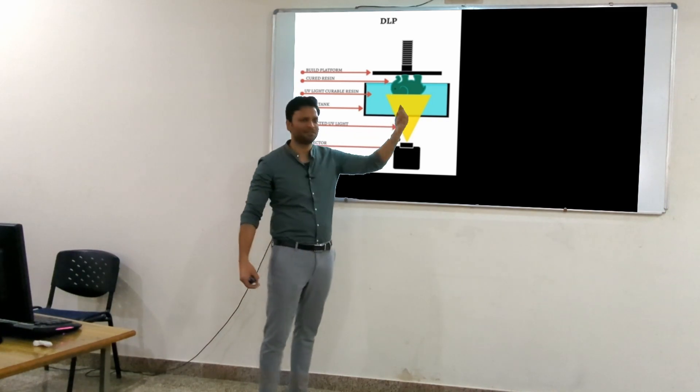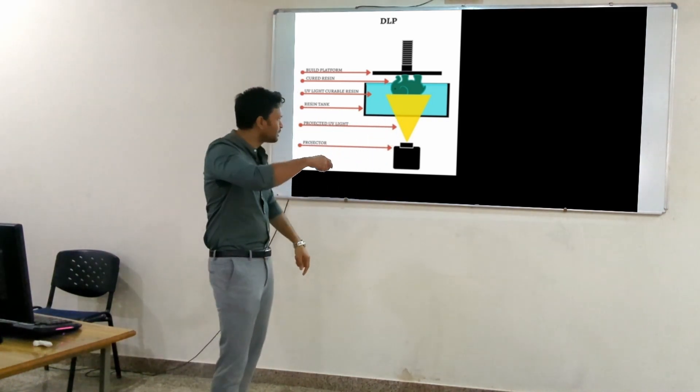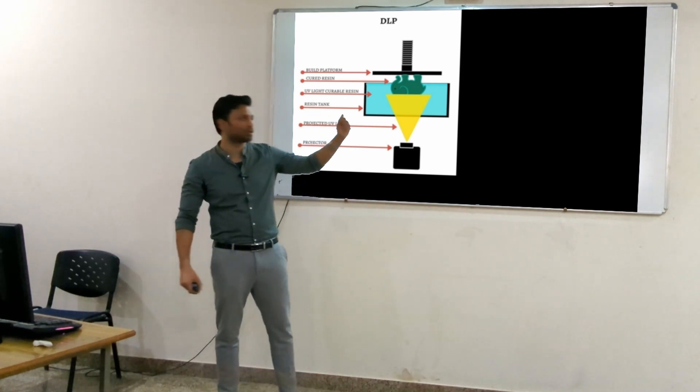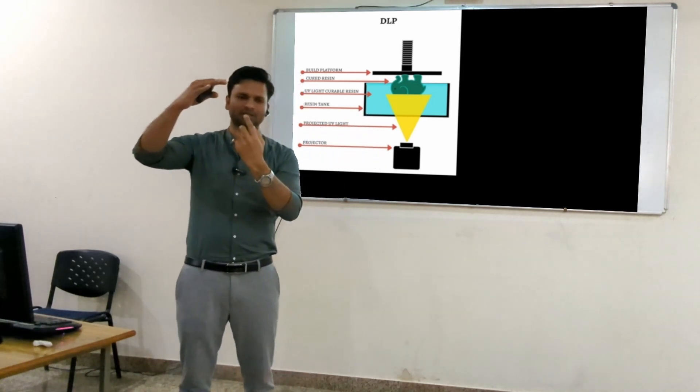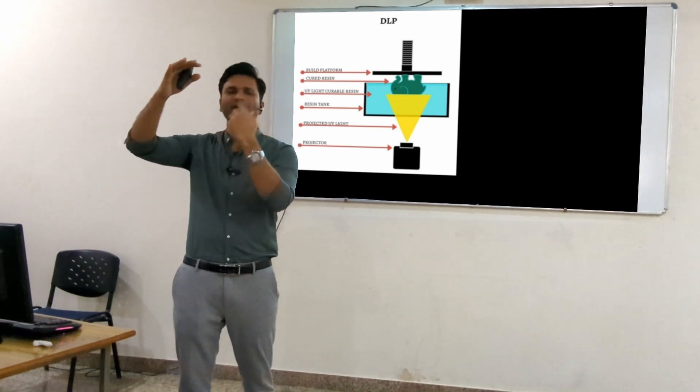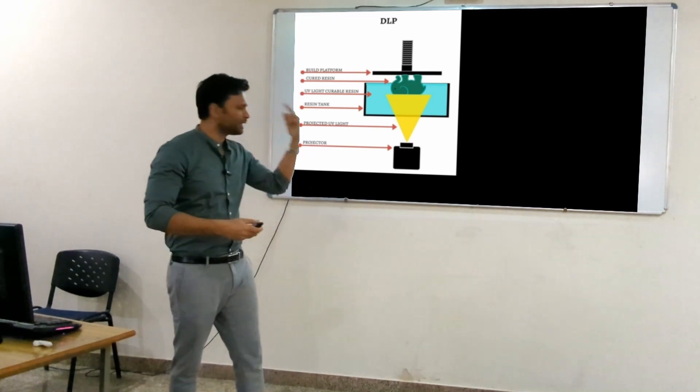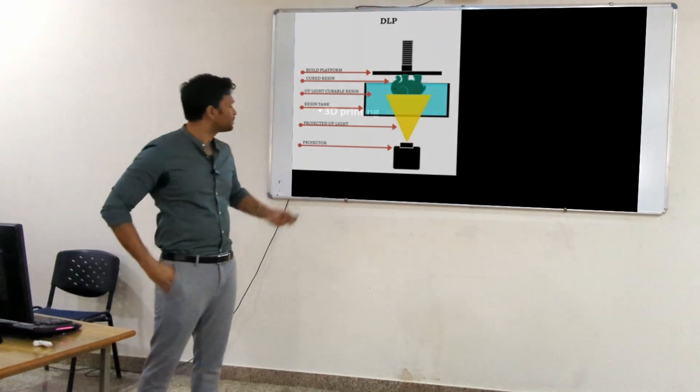In this, the plate is dipped inside liquid resin and the resin is cured by a very focused light. The light is focused on the build plate in that area and the resin in that area is cured - it becomes hardened. So resin is being cured layer by layer. That is DLP.